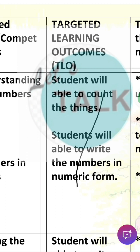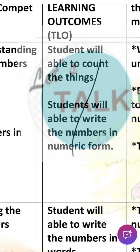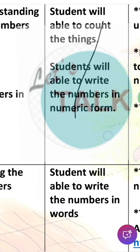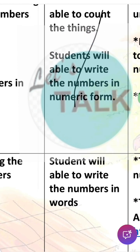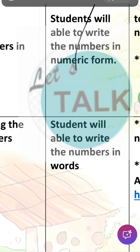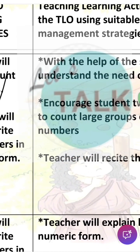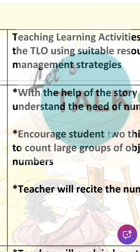Next is the Targeted Learning Outcome — TLO. What is TLO? TLO means what children are learning in this chapter. So the outcome of Chapter 1 for Class 3 Maths Mela New Books is: students will be able to count things, write numbers in numeric form, and write numbers in words.